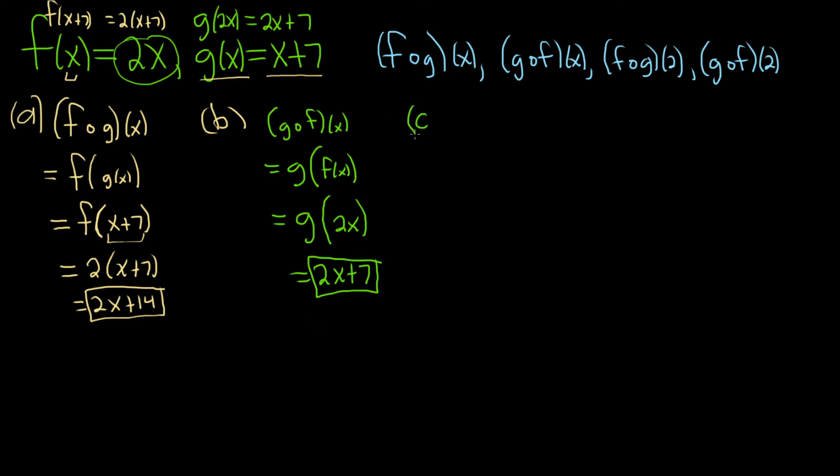Part C, much easier. So we want f∘g of 2. So we already have a formula for f of g of x. It's over here. It's 2x plus 14. So all you do is just plug in the 2 into your formula from before. So it'll be 2 times 2 plus 14. So you just get 4 plus 14. So you just get 18.